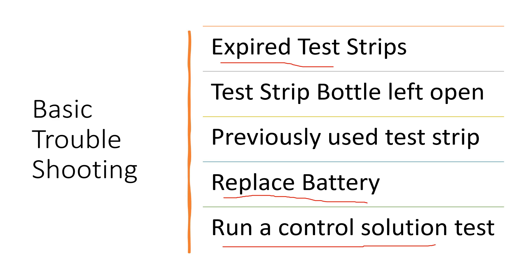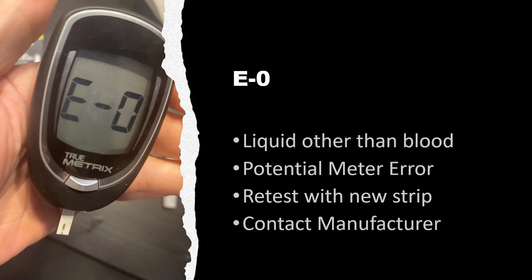E0 means a liquid other than blood was used to do the reading, or a potential meter error. Use a new test strip and try retesting. If this continues to occur, you can contact the manufacturer — the number is found on the back of the meter.